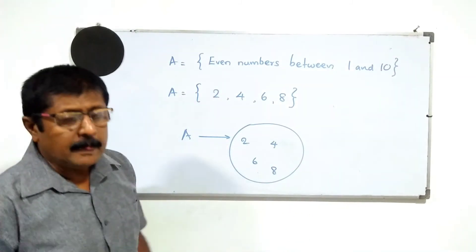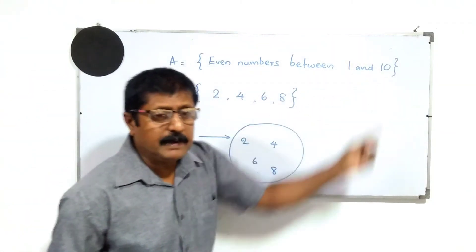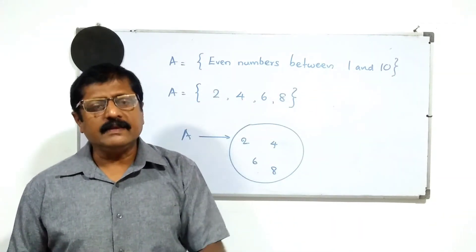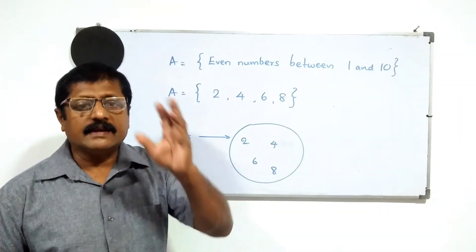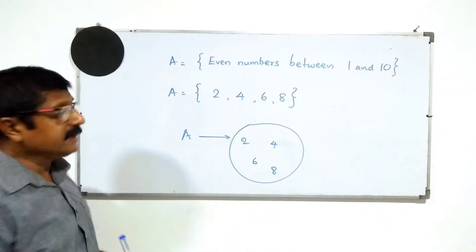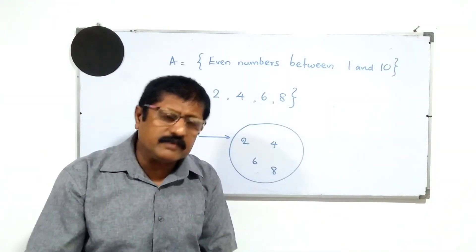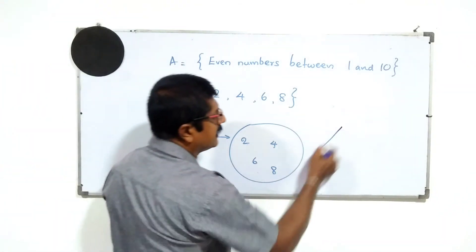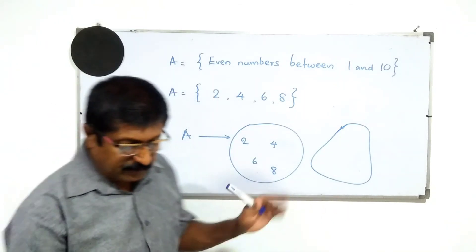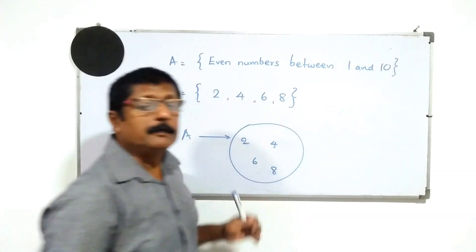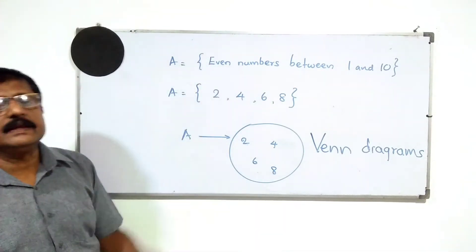When we write a set there are three possible methods. Number one: describing using a common property within curly brackets. Number two: listing the elements — writing the list of elements. Number three: writing the elements inside a closed figure. It need not be a circle; any closed figure works. This method was invented by mathematician John Venn, so these are called Venn diagrams.